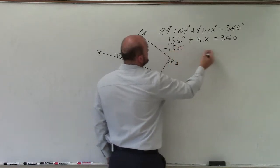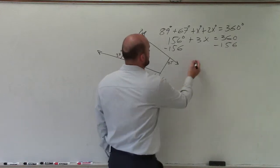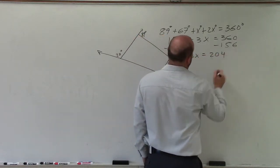Subtract 156 from both sides. I'll have 204, so 3x equals 204.